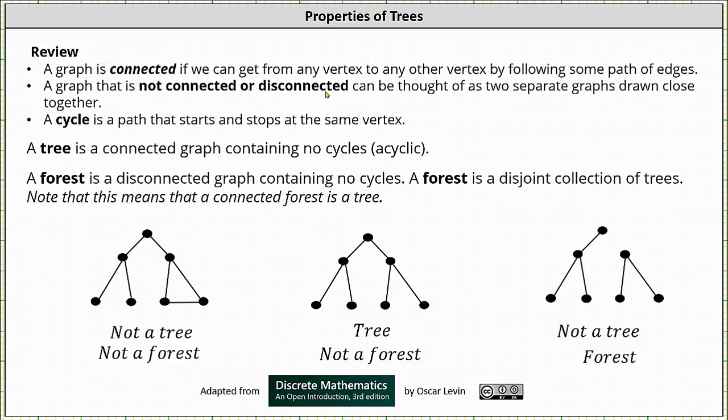A graph that is not connected or disconnected can be thought of as two separate graphs drawn close together. This means there must be at least two vertices for which there is no path to get from one vertex to the other if the graph is disconnected.